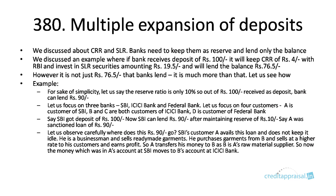Now let us observe carefully where this 90 rupees goes. SBI customer A avails this loan but does not keep it idle. He is a businessman who sells readymade garments. He purchases garments from B, who is A's raw material supplier, and sells them in the market at a higher rate to earn his profit. So A transfers his 90 rupees to B, and since B is a customer of ICICI, the money moves from A's account at SBI to B's account at ICICI Bank.